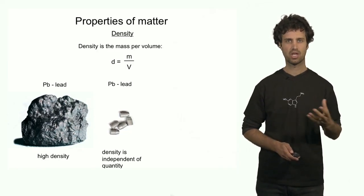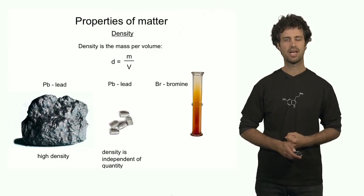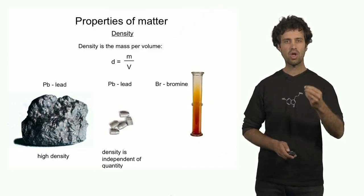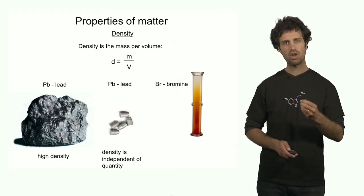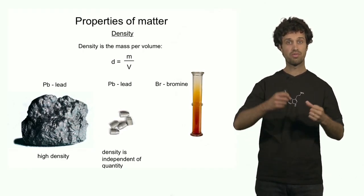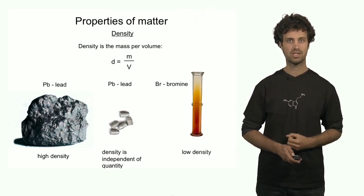Now let's look at a material that has a low density. This is bromine gas. Bromine gas has a low density because it has low mass per unit volume. It has a low mass per unit volume because the molecules are very, very far apart, leading to a low density material.